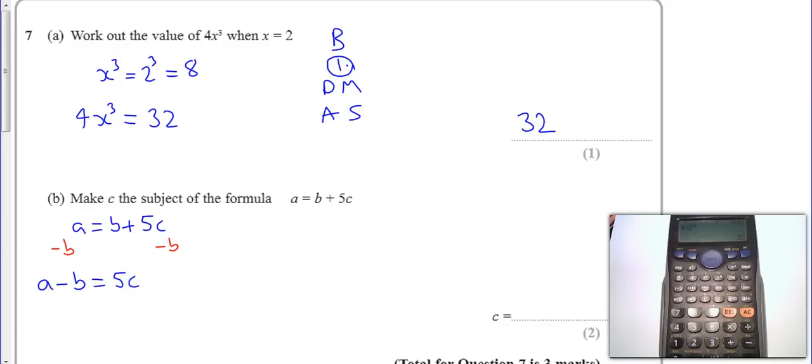And then I'm going to divide both sides by 5. I've chosen 5 because it's multiplied by 5 there, and then that's just going to give me C. It's going to give me A minus B all divided by 5 is equal to C. So A minus B over 5, two marks, done.